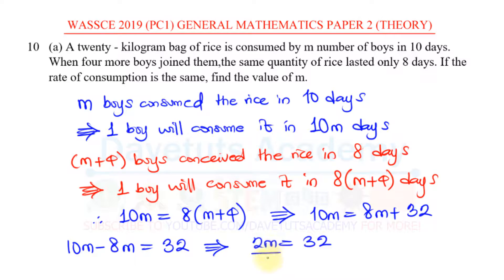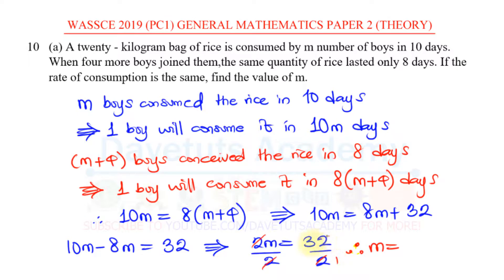Dividing both sides by 2, the 2s cancel: 2M equals 32, so M equals 16.